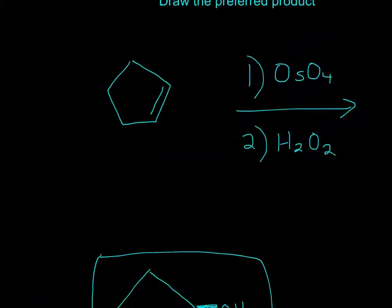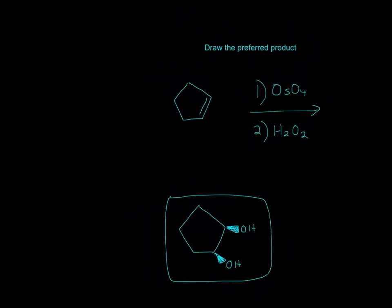Okay, so what OsO4 does is it forms two alcohols, right? It forms two alcohols that are either two wedges or two dashes.